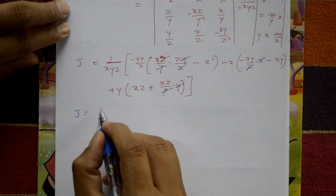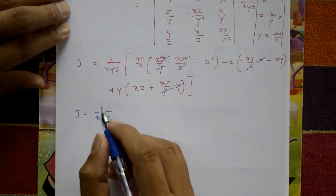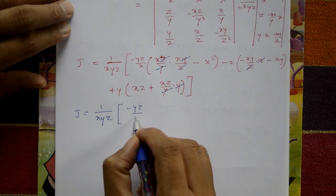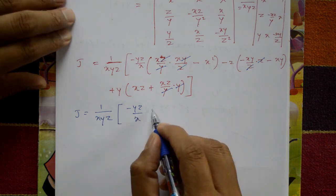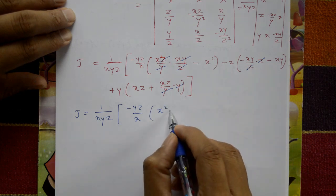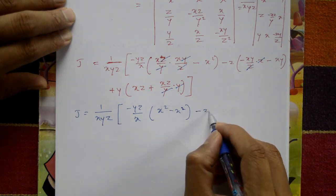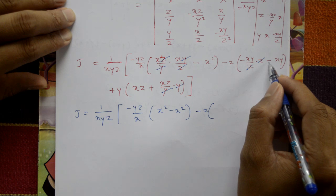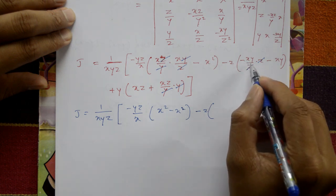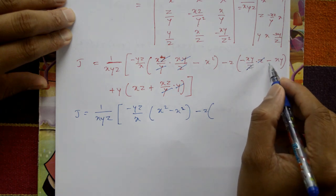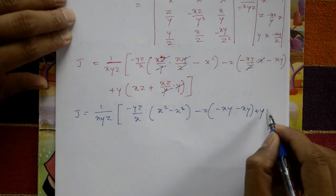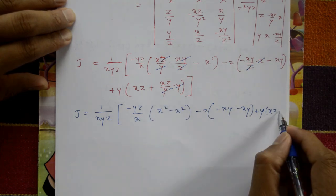After cancellation, inside the bracket: y cancels, z cancels in one term; z cancels in the second bracket; y cancels in the third. We get 1/(xyz) times the numerator. The remaining terms give x², and combining: −x² − x² + xz + xz after expanding all minors.